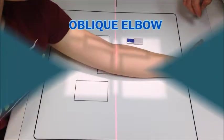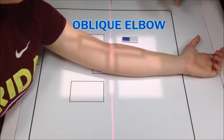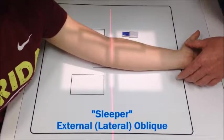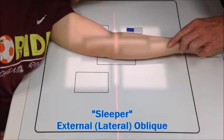The next view is the oblique. It's an external rotation. We call it the sleeper view. You just tell the patient to roll over.